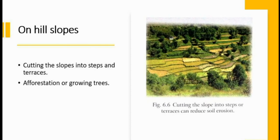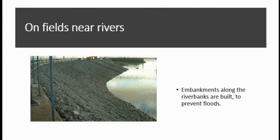On fields near rivers, during the monsoon many rivers overflow and flood the fields. To prevent floods, embankments along the river banks can be built. Embankments are walls built along the river bank, as seen in the figure. They hold the water between the banks and prevent soil erosion. These were some of the measures that can be taken to conserve the soil.